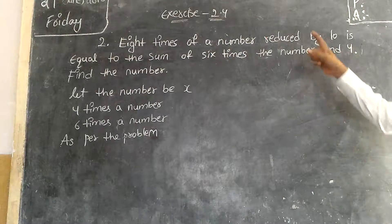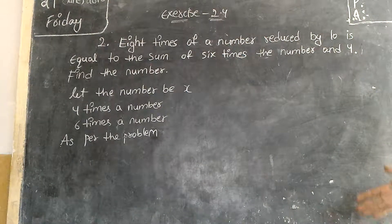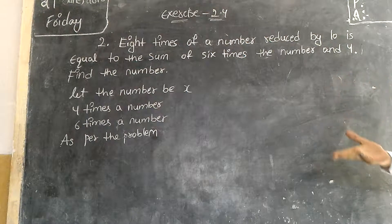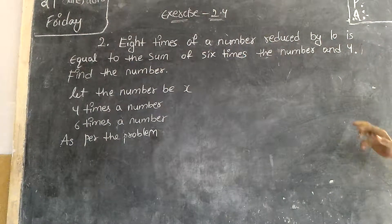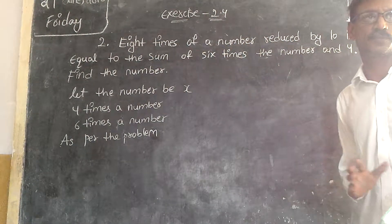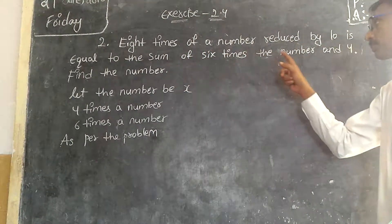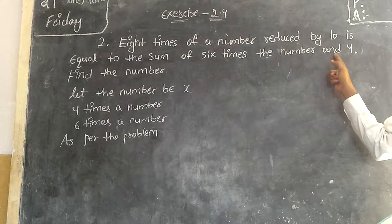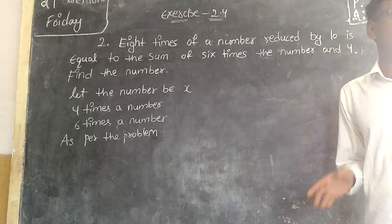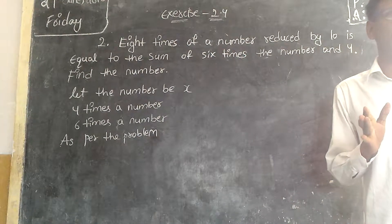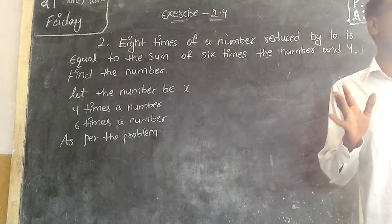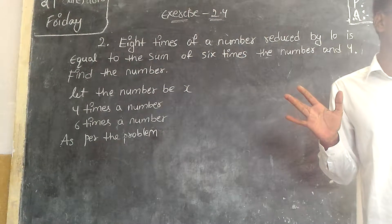Eight times of a number is reduced by 10. Eight times of a number is reduced by 10 is equal to the sum of six times of the number and means plus 4. So first you write the given statement in the form of linear equation.